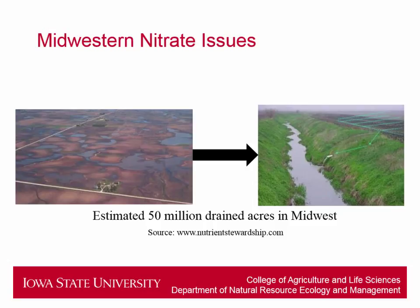So every 60 or so feet, we have another tile drainage pipe, and that essentially all leads out to a ditch and a lot of the water leaves. Essentially, a little over 50 million acres of the Midwest is drained. There's more tile drainage going in every year, so this problem keeps increasing.